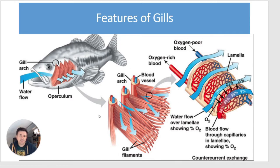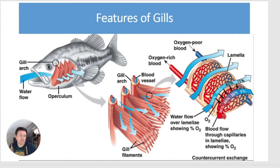In the middle you can see gill arches, which contain blood vessels. Those blood vessels have capillaries that run through tiny structures called gill filaments. The gill filaments are arranged in two rows per gill arch. Looking more closely, on the gill filaments there are structures called lamellae, and water flows over the lamellae while blood travels in the opposite direction.